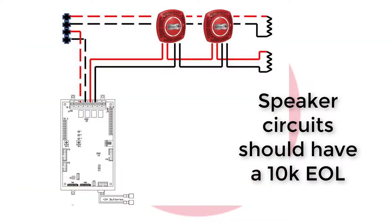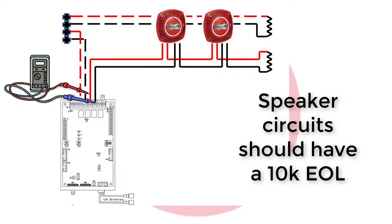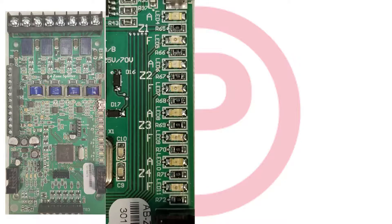If no zone splitter is installed, you will need to use your own meter to read for a 10K end of line resistor on the speaker circuit wiring on terminal block 1, terminals 5 and 6. If a zone module is present, then you will need to refer to the LEDs on the zone module to determine which speaker circuit is open.